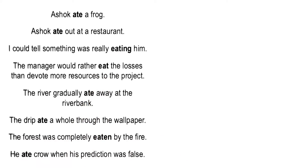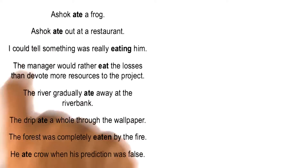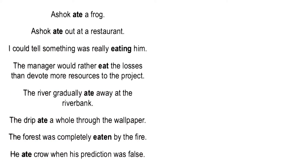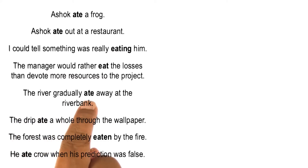Just like we had in the previous lesson with the word 'take,' which had so many different meanings, 'eat' also has many different meanings. When we were discussing the word 'take,' we discussed how we can use both the structure of sentences as well as background knowledge to disambiguate between different interpretations. We could do something similar with 'eat' — enumerate all the different meanings, and for each meaning ask what it is about the sentence structure and background knowledge, such as knowledge about rivers and riverbanks, that tells us the meaning.